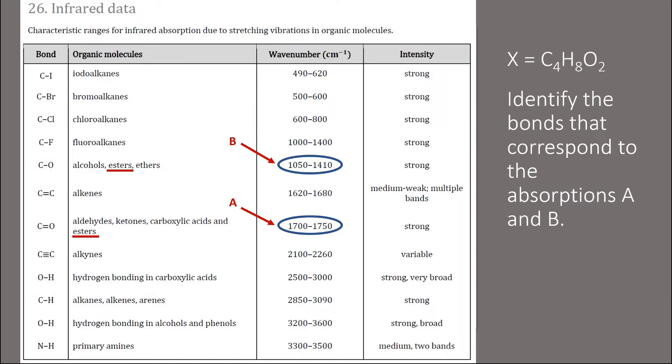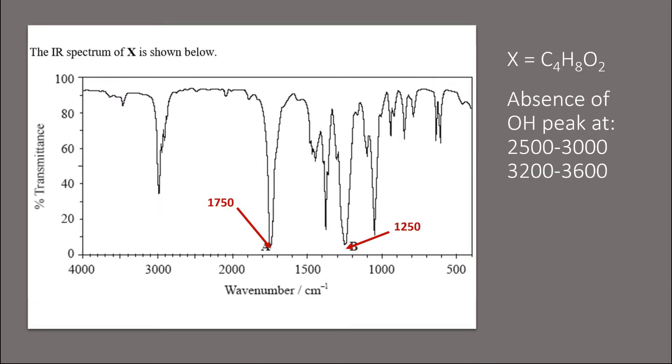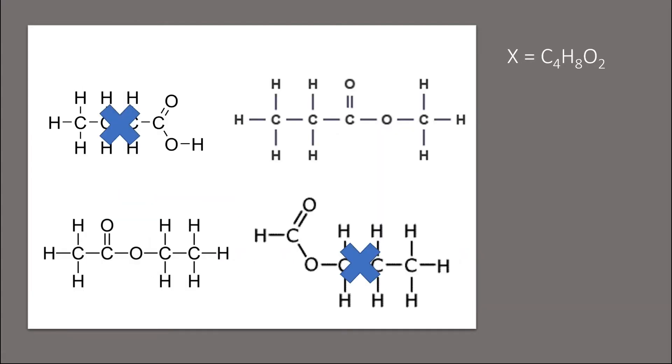If we look at the spectrum again, we see that it's missing the carboxylic acid peak at 2500 to 3000 and the alcohol peak at 3200 to 3600. So let's eliminate the isomers that we drew earlier that do not match the IR spectrum, which are the carboxylic acids.